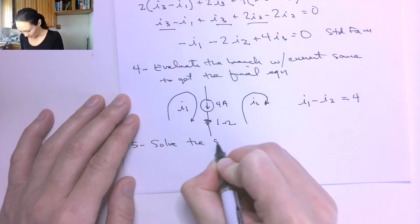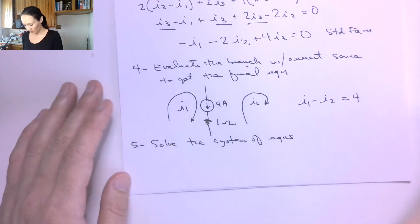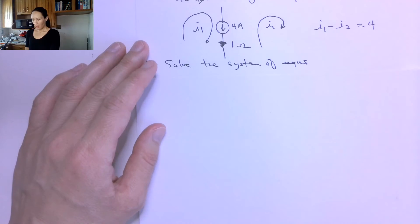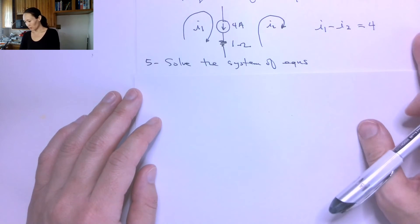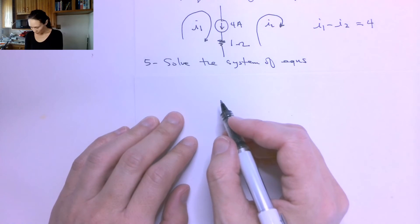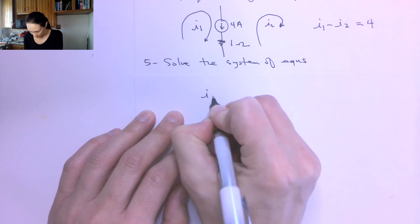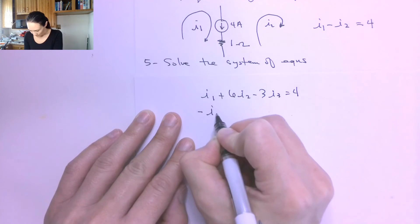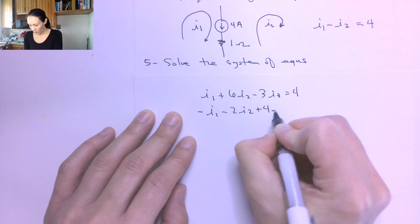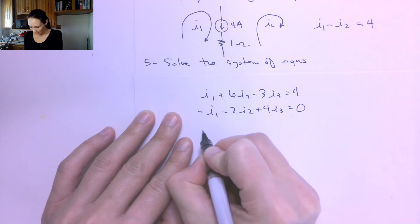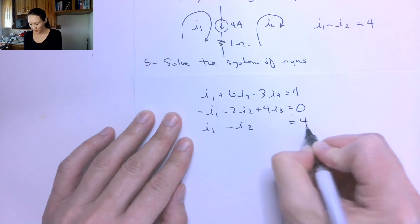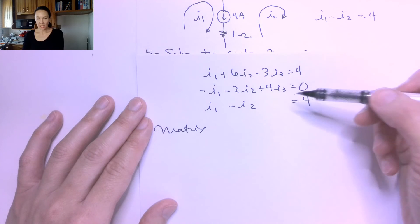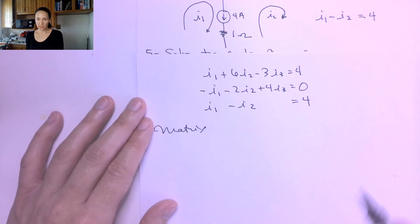The last step is to solve the system of equations. I have 3 equations and 3 unknowns, all in standard form: I1 plus 6I2 minus 3I3 equals 4; negative I1 minus 2I2 plus 4I3 equals 0; and I1 minus I2 equals 4. The way we put this into a matrix is to grab all the coefficients of the left-hand side and augment it with the right-hand side values.